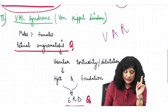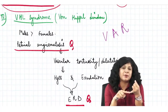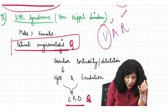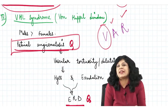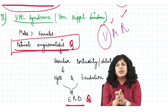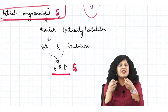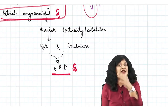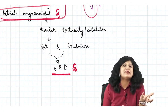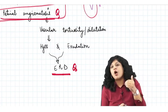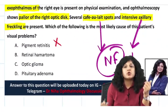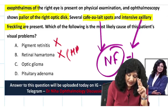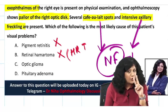Von Hippel-Lindau syndrome is also included in the phakomatoses. Remember VAR: V for von Hippel, A and R for retinal angiomatosis. The retinal angiomatosis leads to tortuosity and dilatation of vessels, similar to Coats disease, resulting in exudative retinal detachment — not an optic disc problem. So von Hippel-Lindau is also ruled out in this patient.